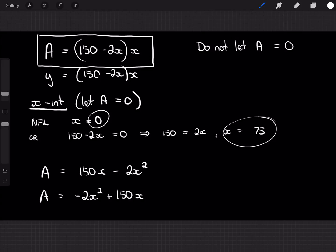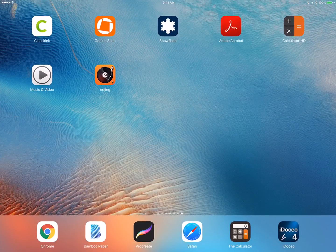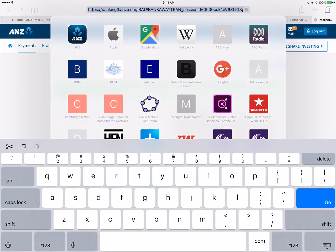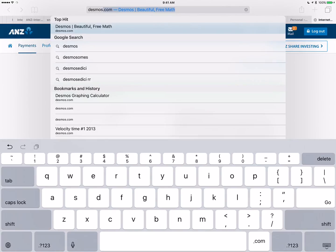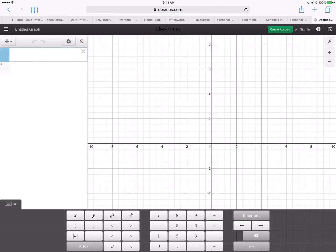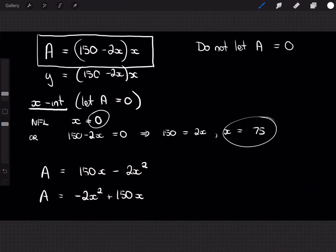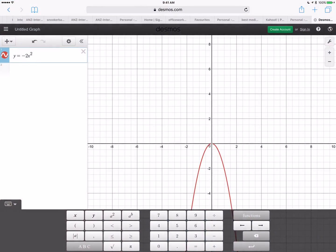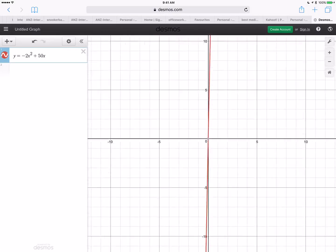So, what we could do, we can have a look at that on the parabola, on Desmos, just to see what we're dealing with. So, it's y equals, and when you're using a program like this, I'm going to use y. y equals negative 2x squared